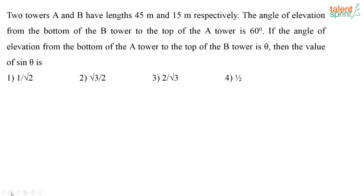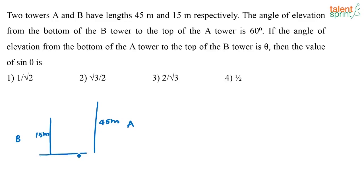So how will you approach this? You have two towers of lengths 45 meters and 15 meters respectively. Let us take this as tower A and this as tower B. The angle of elevation from the bottom of tower B to the top of tower A — this angle — is 60 degrees. Similarly, the angle of elevation from the bottom of tower A to the top of tower B is given as theta, and you have to find out the value of theta.